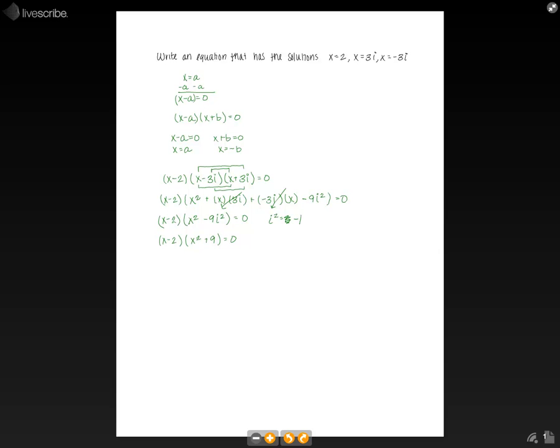From here now we just need to distribute the x minus 2. We're going to do the first terms, x cubed, the outside terms, plus 9x, the inside terms, minus 2x squared, and the last terms, minus 18 equals 0.